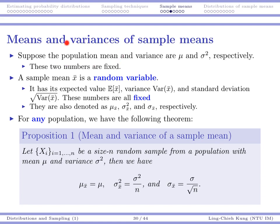Suppose the population mean and the population variance are mu and sigma squared, respectively. We know that these two numbers are fixed, and they exist somewhere we don't know, but they are fixed. Now, we also know that our x-bar is a random variable, so we want to find its expected value and its variance. And if we have the variance, we have the standard deviation. For any random variable, those expected value, variance, or standard deviation are again fixed values. We want to find these fixed values, denoted as mu_x-bar, sigma-squared_x-bar, and sigma_x-bar.